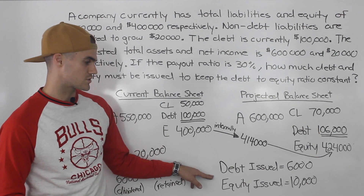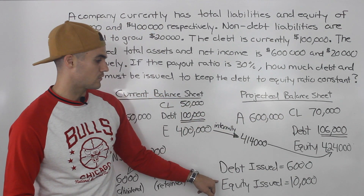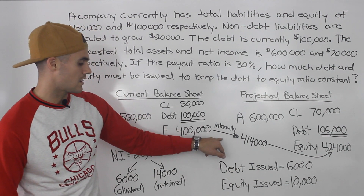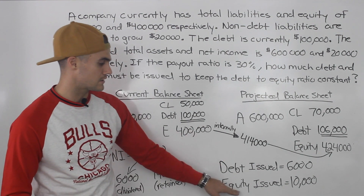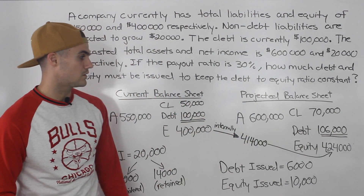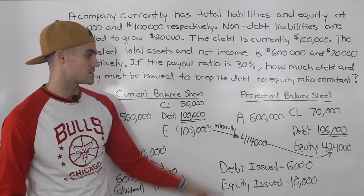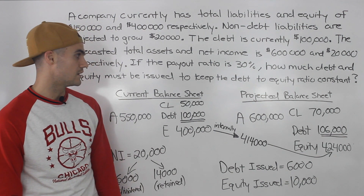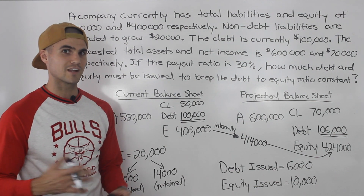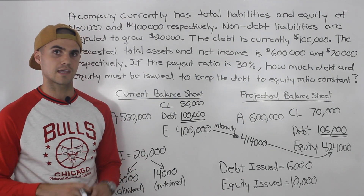So the final answers: debt issued is $6,000 (from $100,000 to $106,000), and equity issued is $10,000. Equity went from $400,000 to $414,000 via retained earnings, then $10,000 was issued externally to reach $424,000 — keeping the debt to equity ratio constant and the balance sheet balanced on both sides. Lots of tricks in this question, so rewatch once or twice if needed.